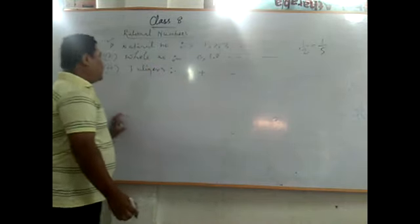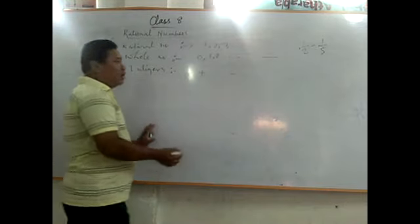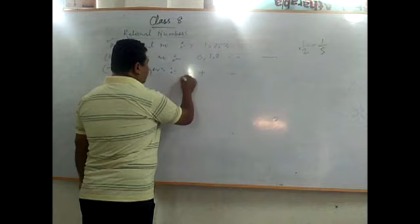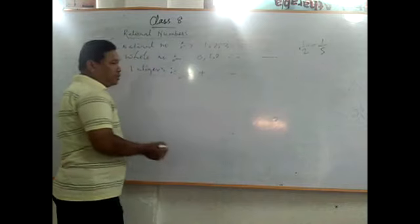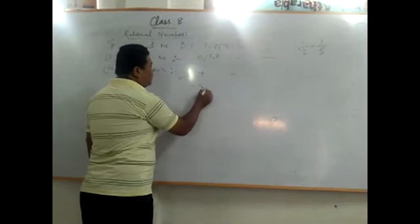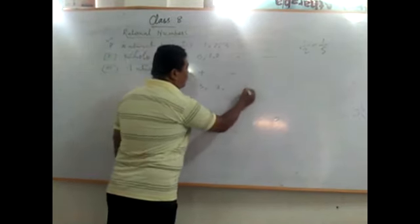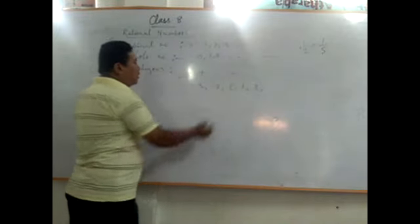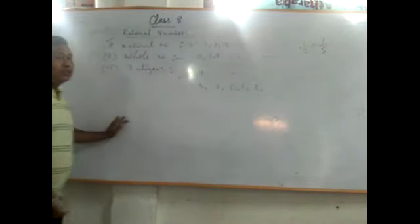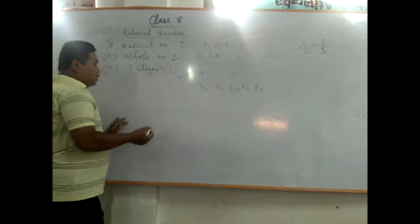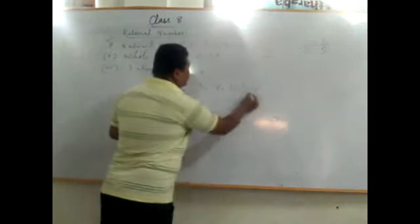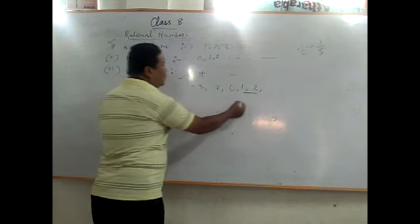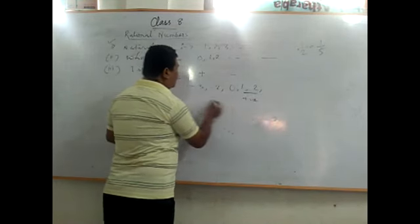So integers include, say, minus 3, minus 2, minus 1, 0, 1, 2 — these all are integers. Integers are classified as positive integers, negative integers, and zero.